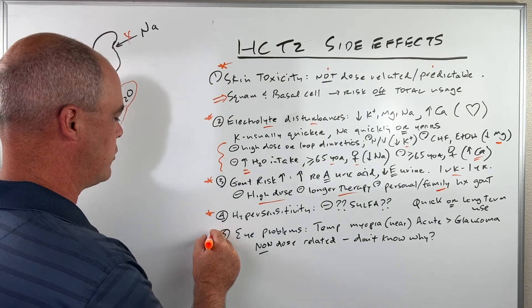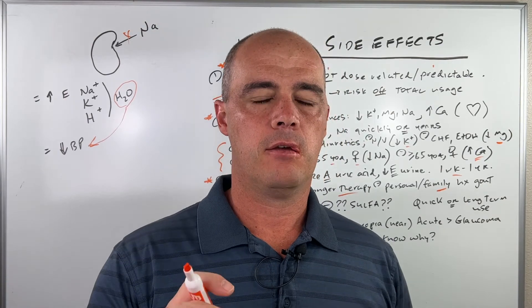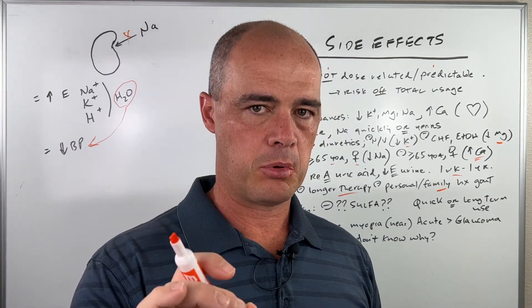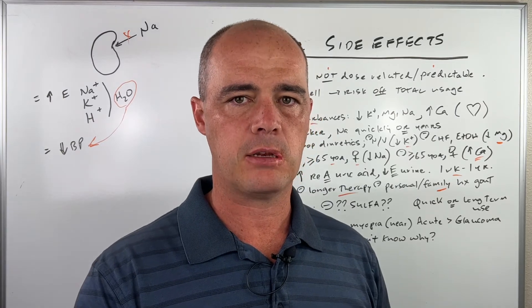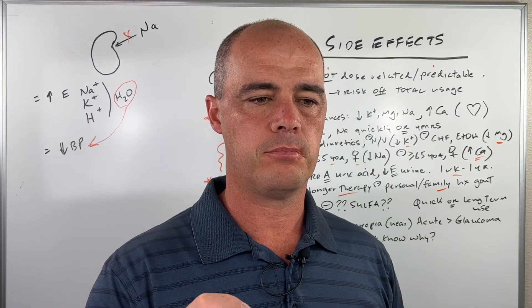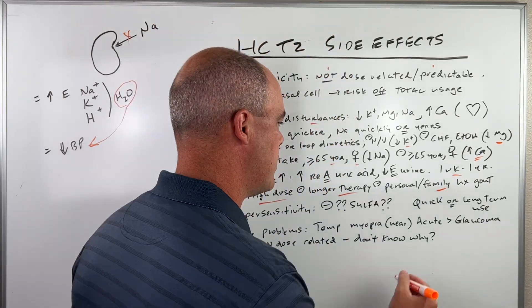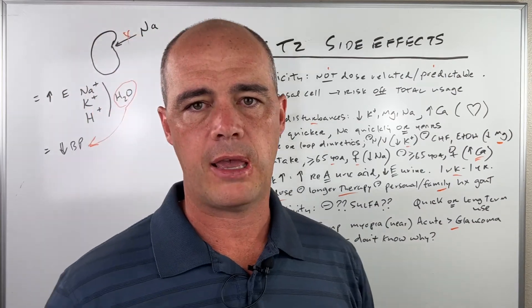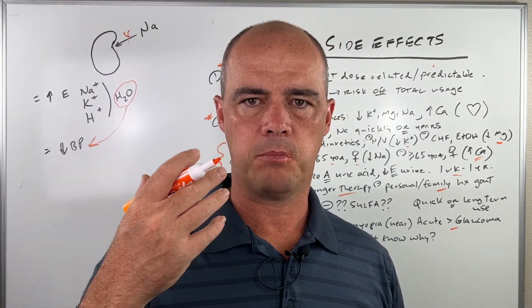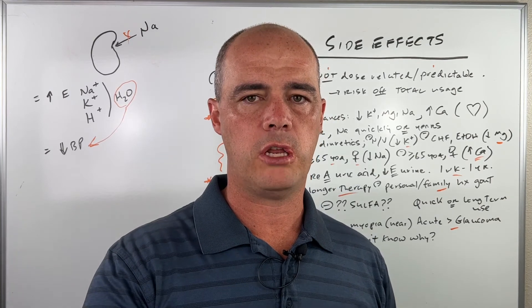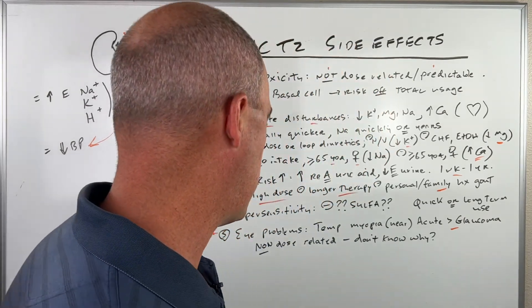And lastly, the big one I want you to know about is eye problems. First of all, these tend to be temporary eye problems. If you start to notice you get myopia or nearsightedness, that can be the hydrochlorothiazide, the HCTZ doing that. Also, it's been linked to acute angle glaucoma. Again, if you start to develop these eye issues, usually when you stop the HCTZ, they tend to go away. So that's the good thing about it.